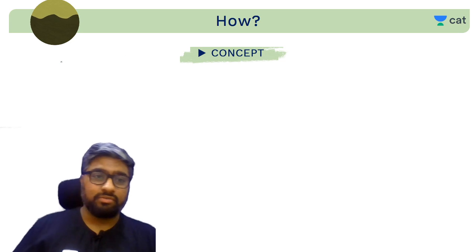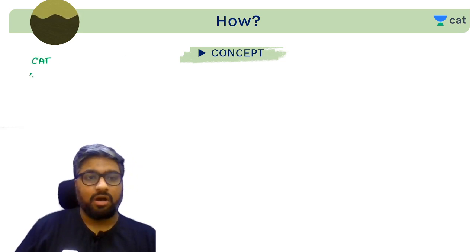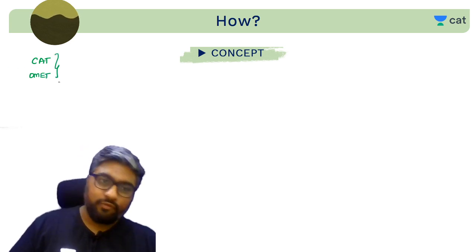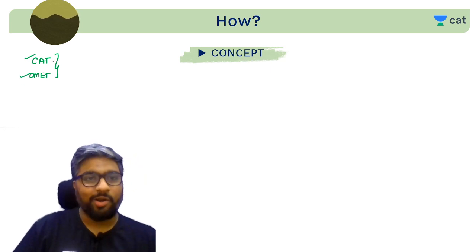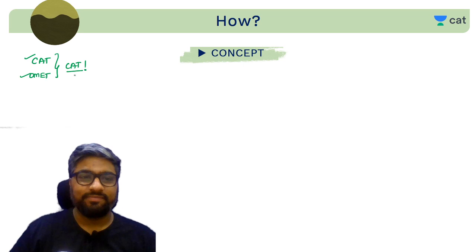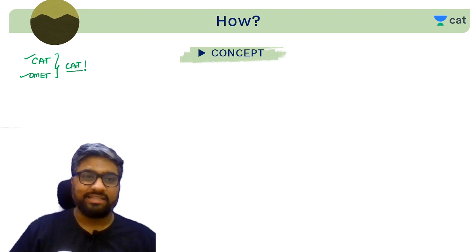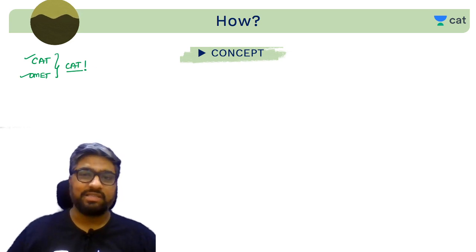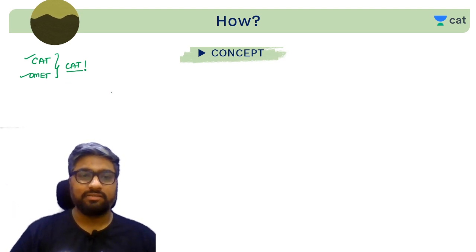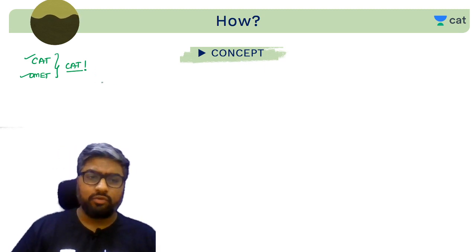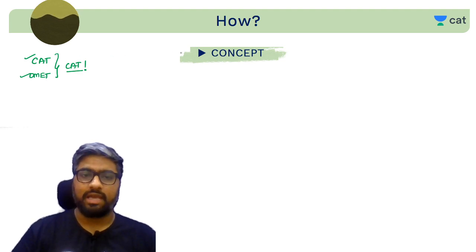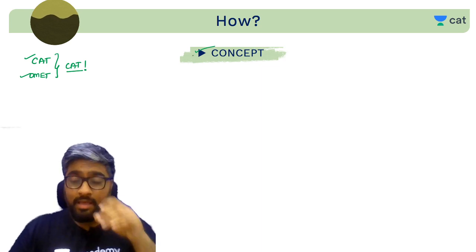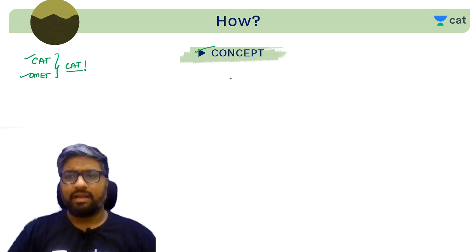For any exam like CAT or other management entrance tests, from now on when I say CAT I automatically mean OMETs too. It's like branding — just like we call all photocopying machines 'Xerox' or all toothpastes 'Colgate.' The first thing needed for any entrance exam is concept. The kind of things tested in CAT — a lot of people think it's unfair if they haven't studied math in a long time, but there's a big difference between math and quantitative aptitude.